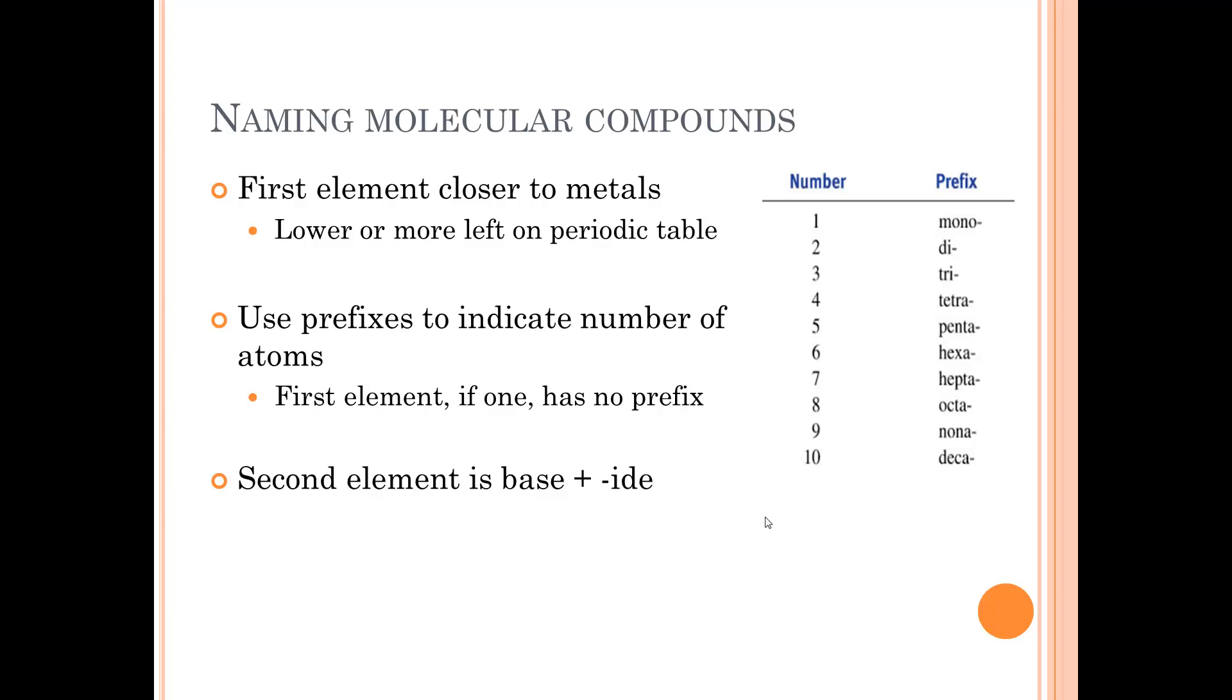The first element closer to the metal, so if we look at the periodic table, these are the semi-metals. Over here we have the metals, and on the right-hand side we have the non-metals. As the atoms get closer to the metal area, they're going to be named first. Which means if they're lower on the periodic table or if they're more on the left of the periodic table, they'll be the first one in the chemical formula.